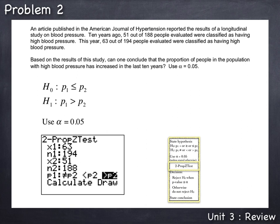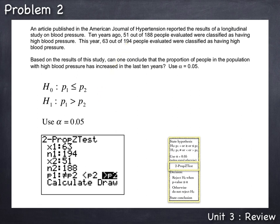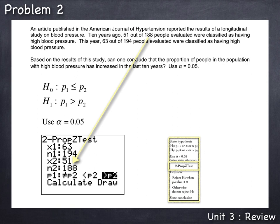Since H1 is P1 greater than P2 to represent increased, our first population is this year's data. So X1, how many had high blood pressure this year, was 63, out of N1 equals 194 people sampled this year. For X2 and N2, our second sample — 10 years ago — X2 was 51 had high blood pressure, out of N2 equals 188 people sampled 10 years ago.